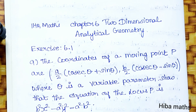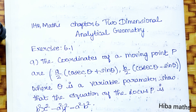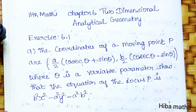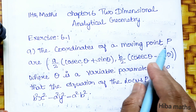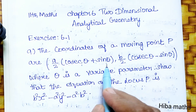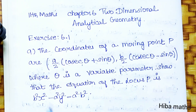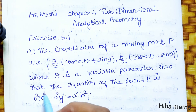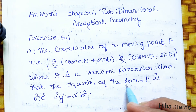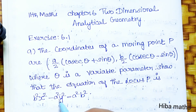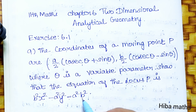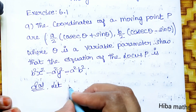Hello students, welcome to Hibamax 11th standard, Chapter 6: Two-Dimensional Analytical Geometry, Exercise 6.1, 9th question. The coordinates of a moving point P are (a/2)(cosθ + sinθ) and (b/2)(cosθ - sinθ), where θ is a variable parameter. Show that the equation of the locus of P is b²x² - a²y² = a²b². This is the proof of the solution.